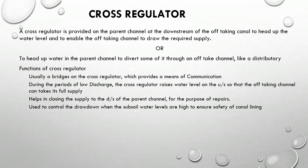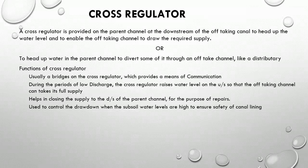The functions of a cross regulator are: usually a bridge is provided on the cross regulator, which provides a means of communication. During periods of low discharge, the cross regulator raises water level on the upstream so that the off-taking channel can take its full supply. It helps in closing the supply to the downstream of the parent channel for the purpose of repairs. It is also used to control the drawdown when subsoil water levels are high, to ensure safety of canal lining.